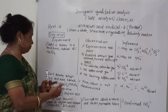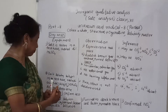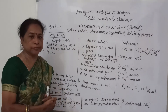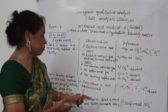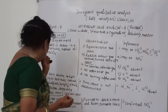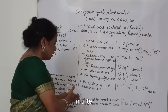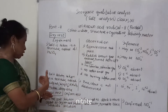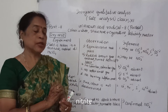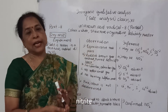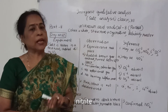Now come to the wet test, which is the confirmed test. To the salt solution, dilute acidity — that is dilute sulfuric acid — and ferrous sulfate solution are added. The solution turns dark brown and later turns black. This confirms NO₂⁻, that is nitrite.